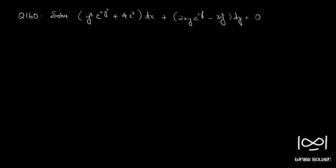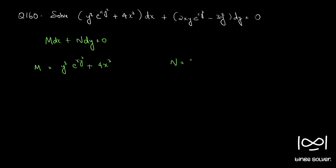Question number 160. Solve y squared e raised to x y squared plus 4x cubed dx plus 2xy into e raised to x y squared minus 3y squared dy equal to 0. The given equation is in the form M dx plus N dy equal to 0, where M is y squared e raised to x y squared plus 4x cubed, and N is 2xy e raised to x y squared minus 3y squared.